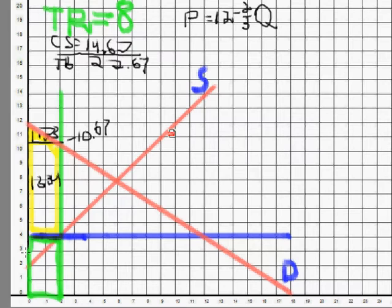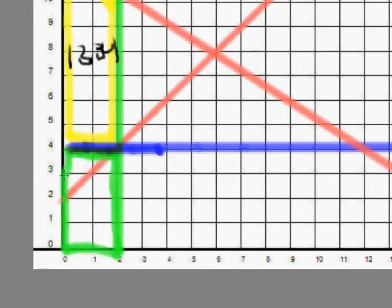Okay, now what I usually do is I look at that total revenue rectangle and split it into two parts. The bottom is the variable costs, the top is the producer surplus. So let me zoom in on that so we can see it better. Okay, now that we're good and zoomed in.